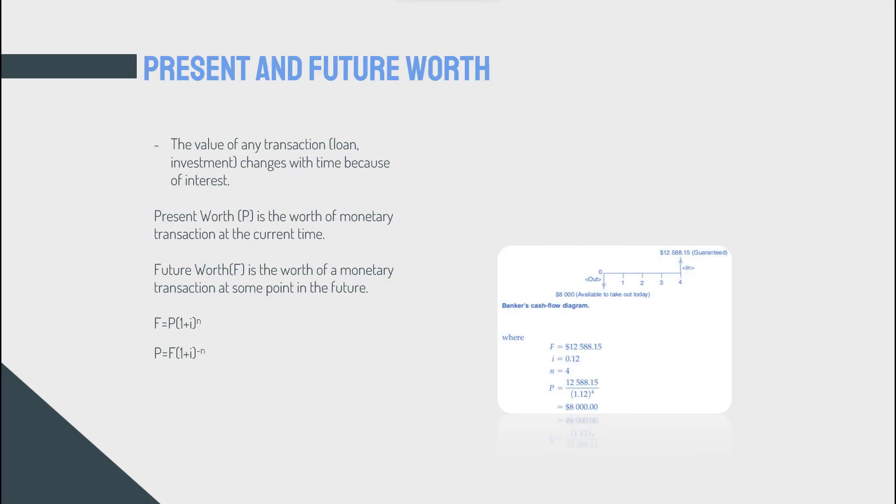Present and future worth. Of course, the value of any transaction, either loan or investment, would change with time. That is because of the interest, as we saw. Present worth, P, is the worth of monetary transaction at the current time, obviously. And future worth is the worth of the transaction at some point in the future. We said F for the compound interest equals P multiplied by (1 + i) to the power of n. And if you rearrange that equation, P would equal F multiplied by (1 + i) to the power of minus n.